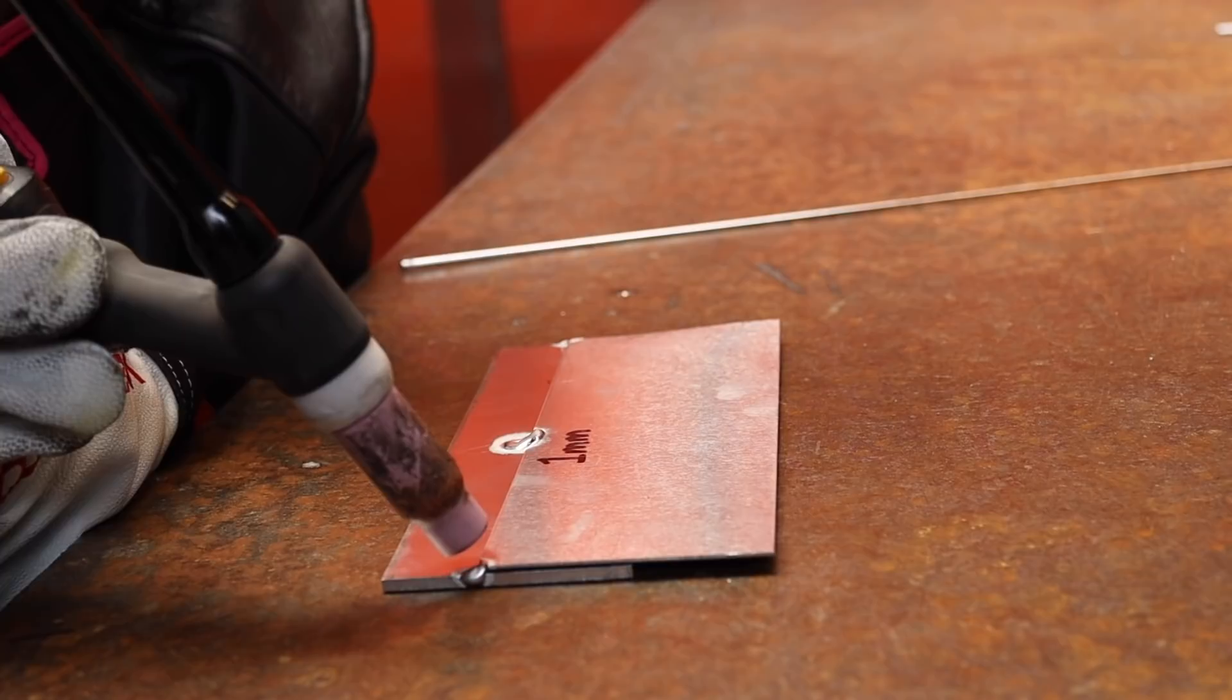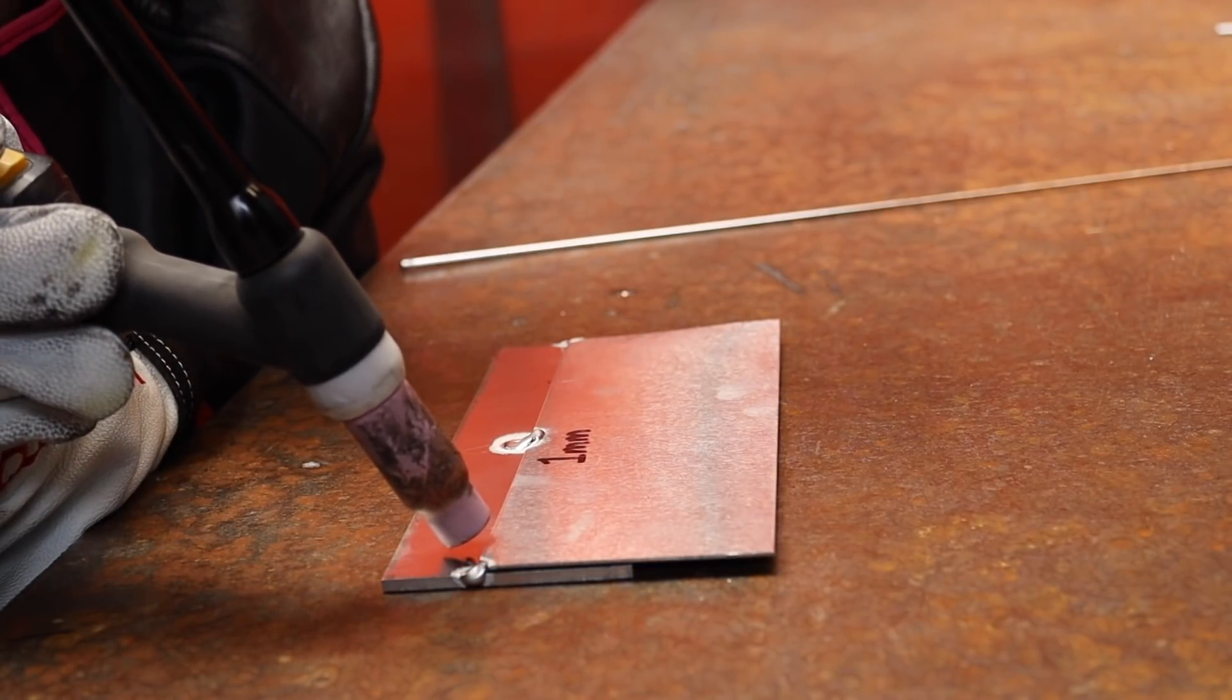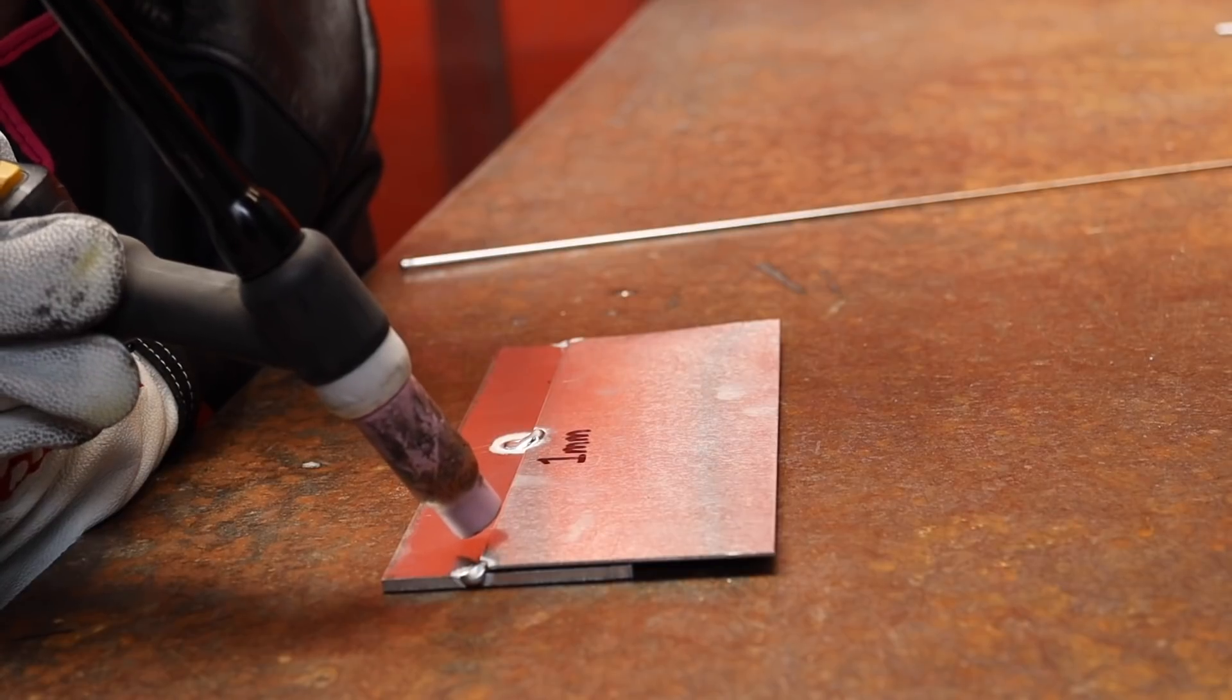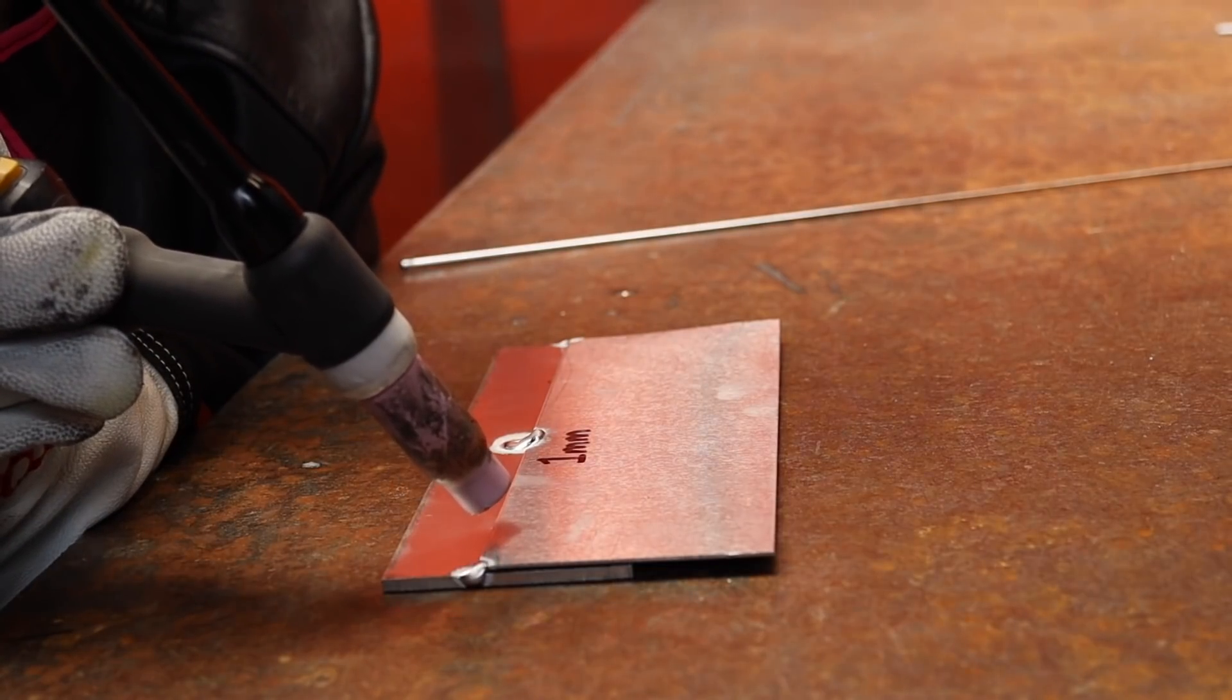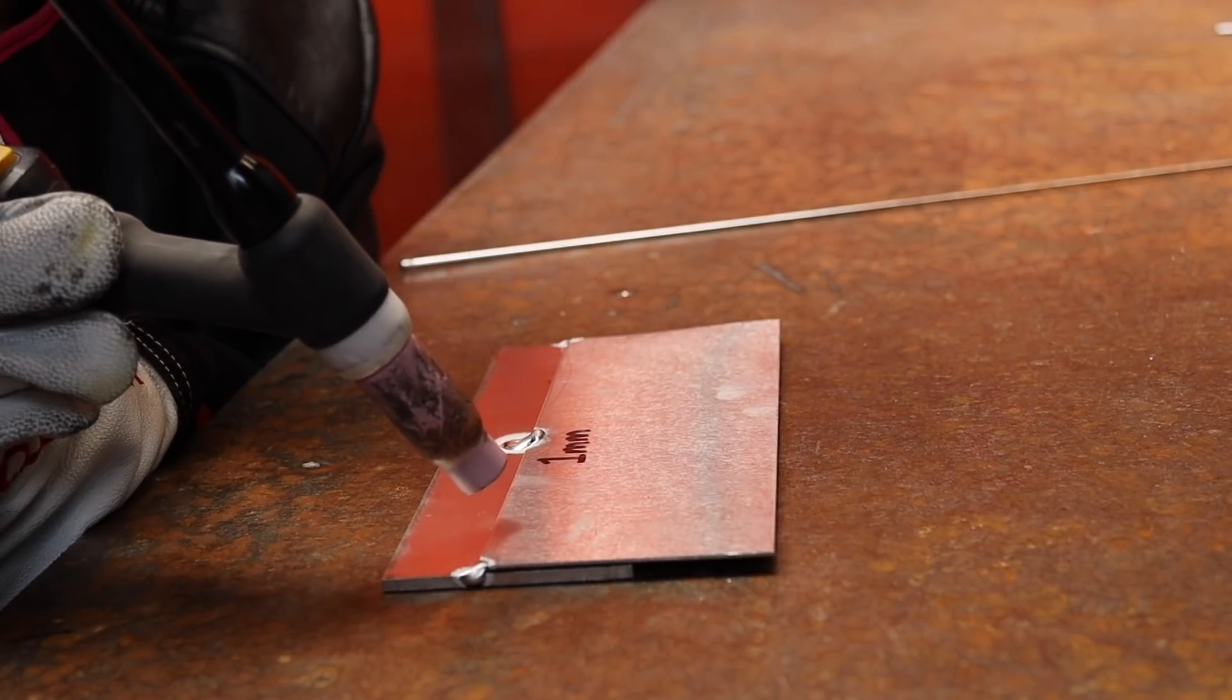And you're just going to go along slowly moving it and you'll be watching the weld pool to see when they've fused. Now we don't want to put too much heat into the 1mm sheet as it will burn away and won't look as good.